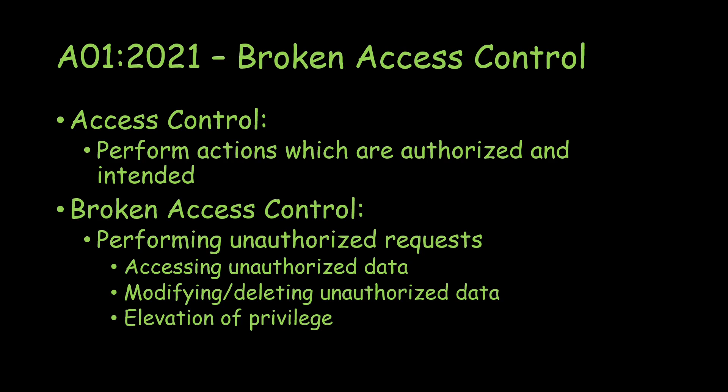Broken Access Control is when the access control in place is broken or not properly implemented — so you end up performing unauthorized requests. One type is accessing unauthorized data. For example, if you are using Facebook and you have Messenger, you can access your own chats. But if you were able to access your friend's Messenger data and read their chats — that would be accessing unauthorized data, which is Broken Access Control.